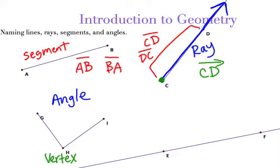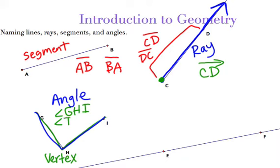We name our angle with a little angle symbol, going either GHI or IHG. Notice in both examples, the letter in the middle is H, the vertex. No matter what, that vertex needs to be in the middle to show it's the middle point of the angle. Angles can go on forever too — they could have little arrows.